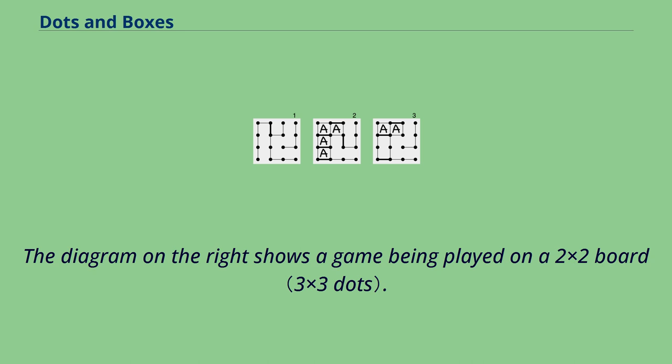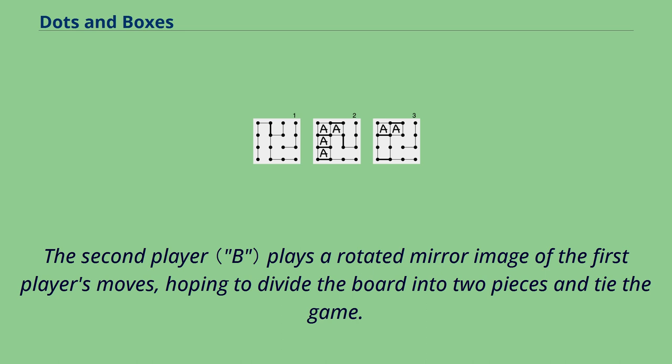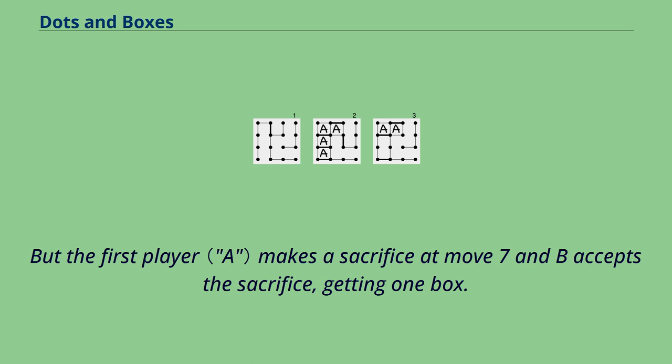The diagram on the right shows a game being played on a 2x2 board. The second player plays a rotated mirror image of the first player's moves, hoping to divide the board into two pieces and tie the game. But the first player makes a sacrifice at move 7 and B accepts the sacrifice, getting one box.